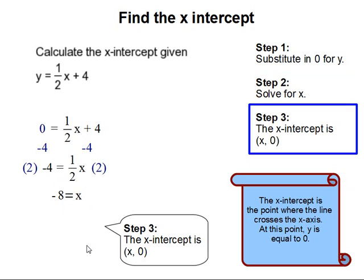Step 3: The x-intercept is then located at x comma 0, which is negative 8 comma 0. And this is where the line crosses the x-axis. This completes our problem.